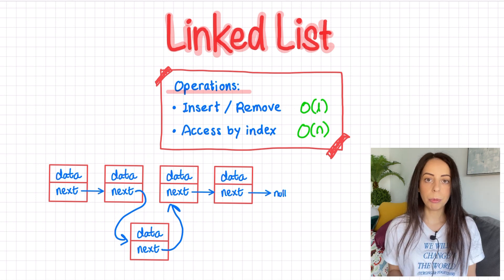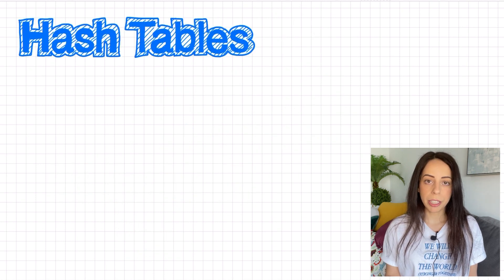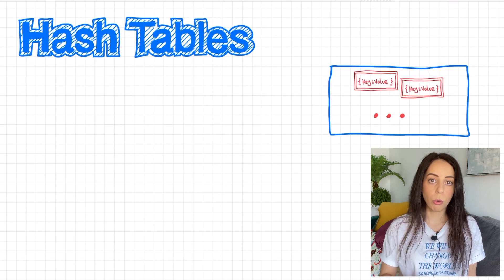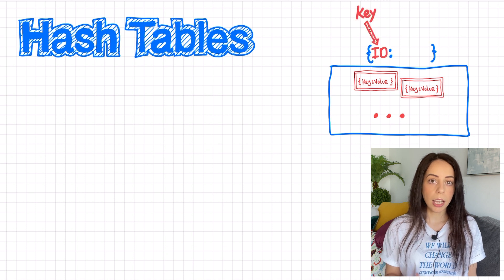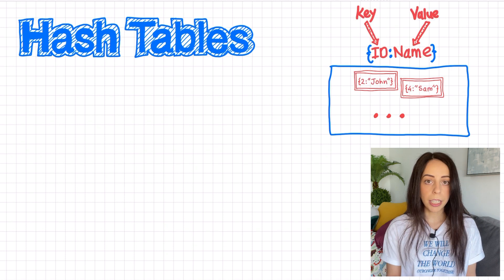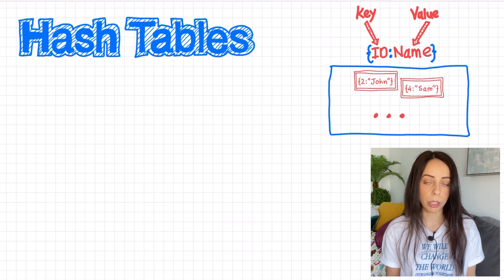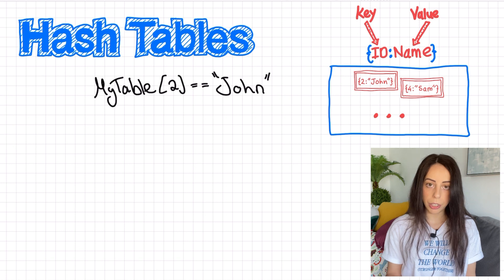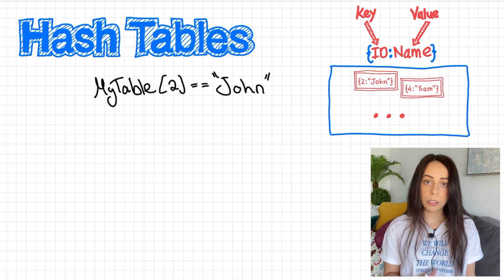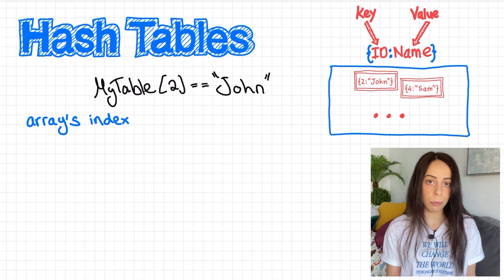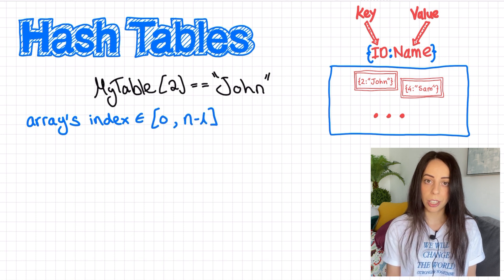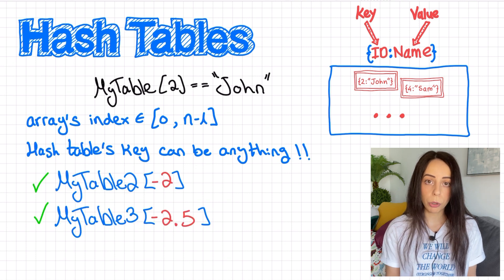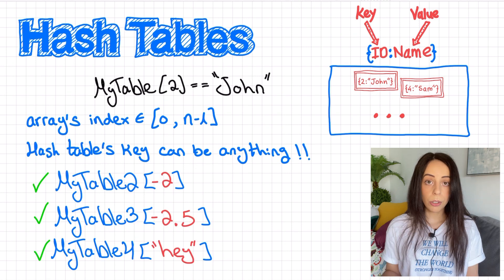Next data structure is probably the most useful one, the hash table. I can almost guarantee that you will need it in your interview. A hash table is a collection of key value pairs. For example, a person's ID as the key and a person's name as the value. The keys are unique and can be used as if there were indices of an array. So for example, this expression, we return the value John because the value for key 2 is John. This is very useful because unlike the array's index, which has to be a positive integer from a known range, the hash table's key can be anything. It can be a negative number, it can be a floating point number, it can even be a string.